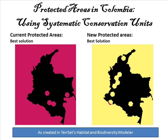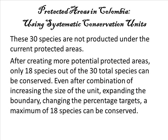These maps were generated in Marxan through a systematic conservation approach. The systematic conservation plan uses hexagons to select protected areas. The map on the left indicates where the current protected areas are located. The map on the right indicates the new protected areas that will be allocated to protect new species. None of the 30 species in the sample were protected by the current protected areas in Colombia. The potentially new regions could only conserve a maximum of 18 species, and 12 species remained unprotected even when boundaries, penalty factors, and target species were set to extreme values.